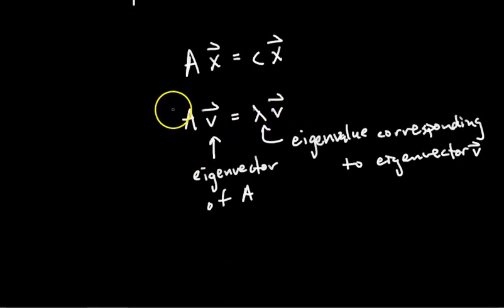So this is really important. This is the canonical image I want you to have in your head when you think eigenvectors and eigenvalues: A times V equals lambda times V.